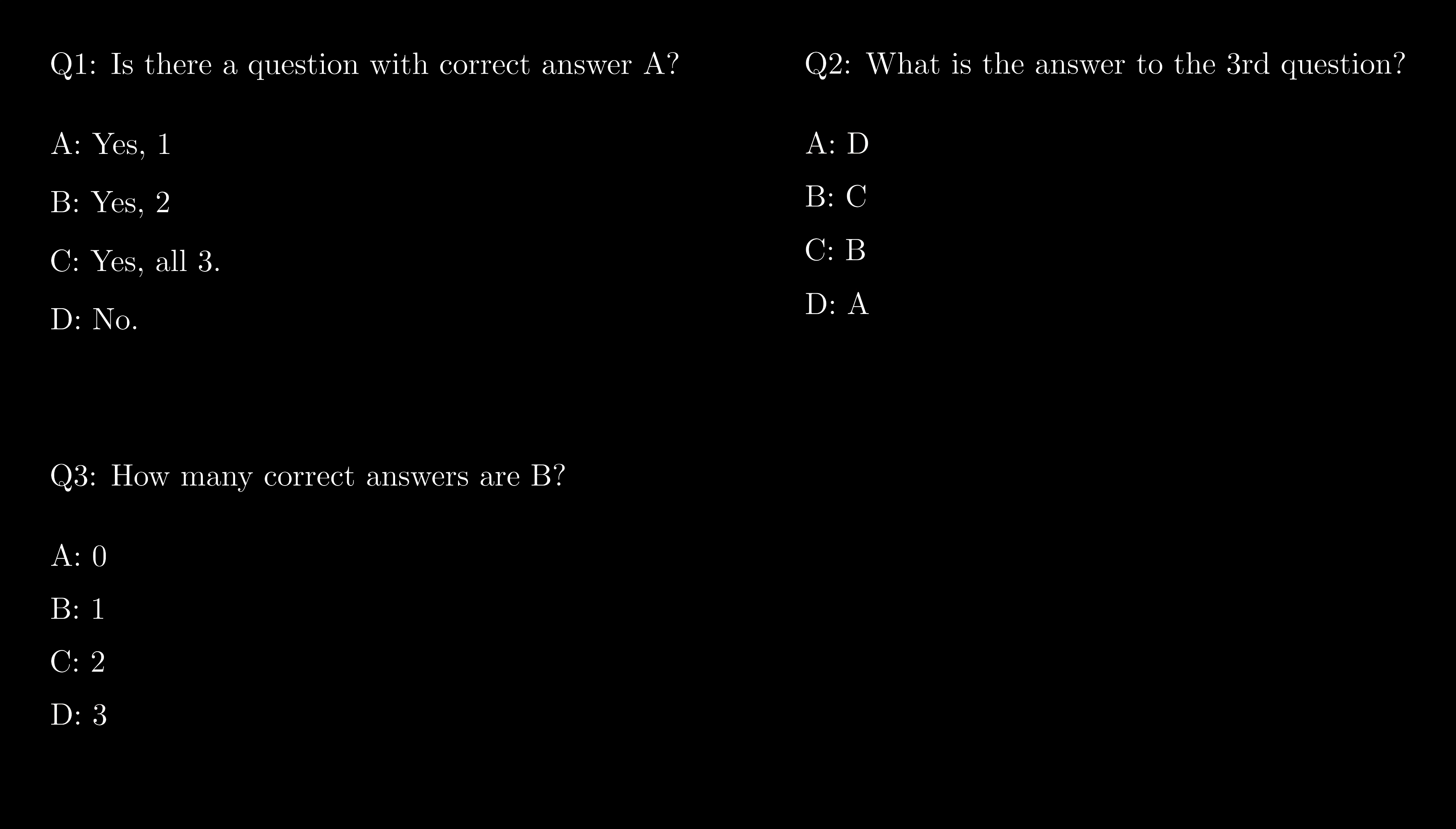What if question number two is B? Then question number three must be C. However, question three says there are two questions with answer B, so question one must have answer B as well. However, option B for question one means there are two correct answers A, but that's just impossible.